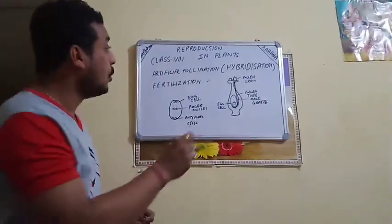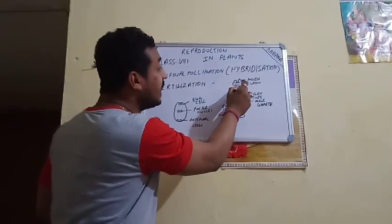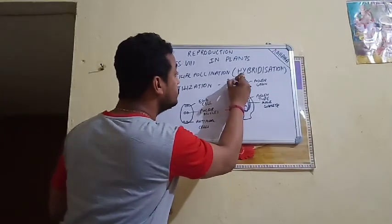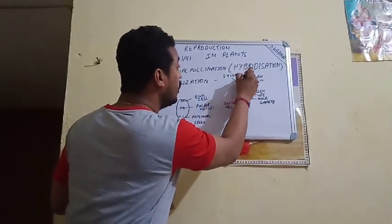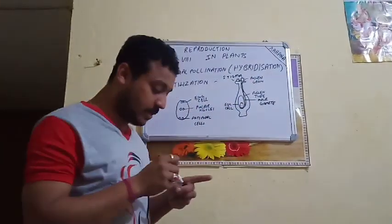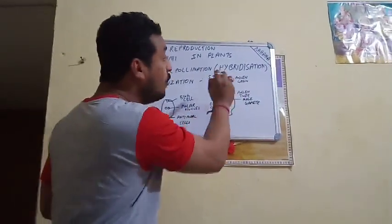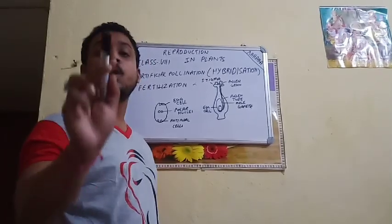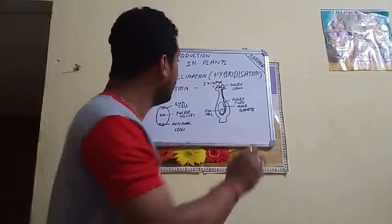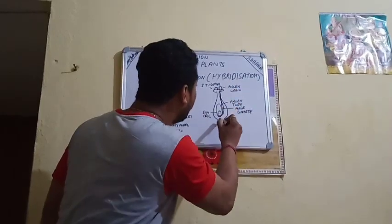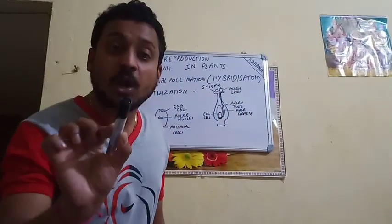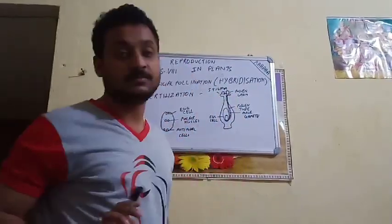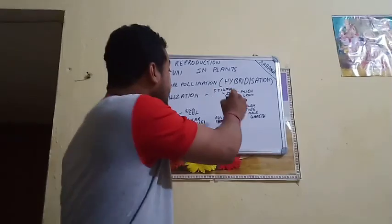When the pollen grain comes and sits on the stigma of the female flower, the stigma will offer a sugary syrup to the pollen grain. Finally, the pollen tube will form. This pollen tube will carry the male gamete within itself.